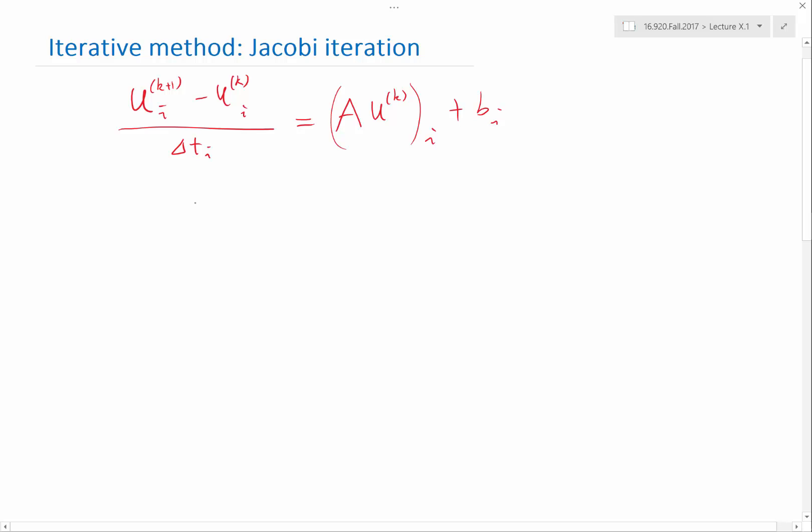And my 1 over delta t i is chosen to be the diagonal element of a.